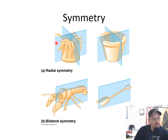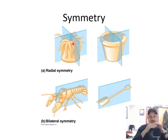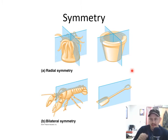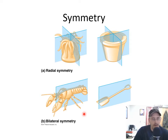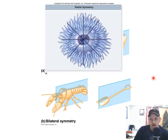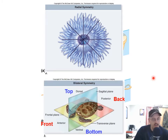Symmetry: things like hydra have radial symmetry — kind of like a wheel, where you can cut them in more than one direction and get equal sides. Whereas bilateral symmetry, like a lobster, means you can only cut it one way and have two equal sides. If you cut it lengthwise, you'll end up with an anterior end and a posterior end, not two equal sides. When you have bilateral symmetry, then we have ventral, dorsal, posterior, and anterior sides, like we talked about during dissection.